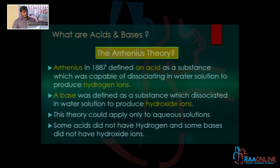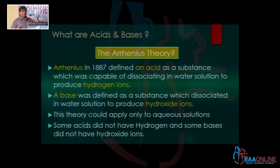Arrhenius in 1887 for the first time came up with a scientific definition of what an acid is. He defined an acid as a substance that was capable of dissociating into and producing hydrogen ions in an aqueous solution. So it dissociated to produce hydrogen ions, and it had to have been in an aqueous solution — a solution that contained water in some form.